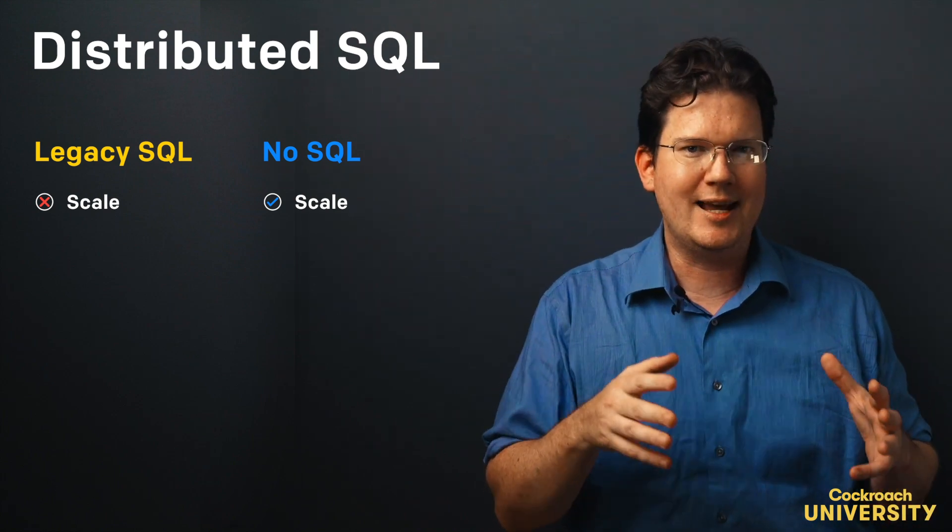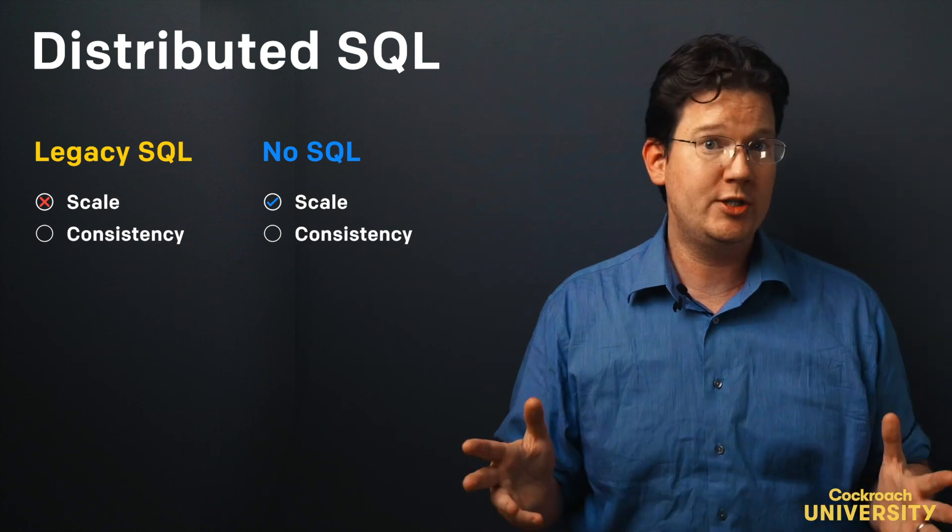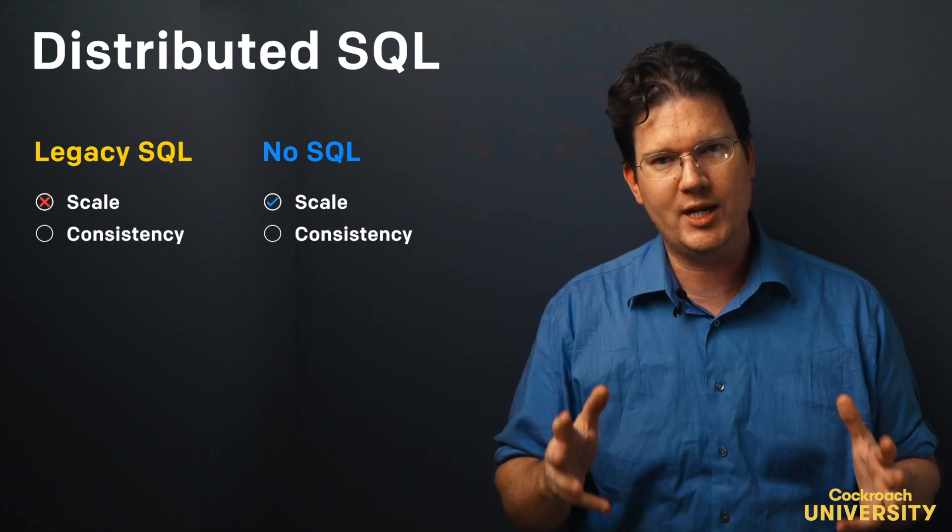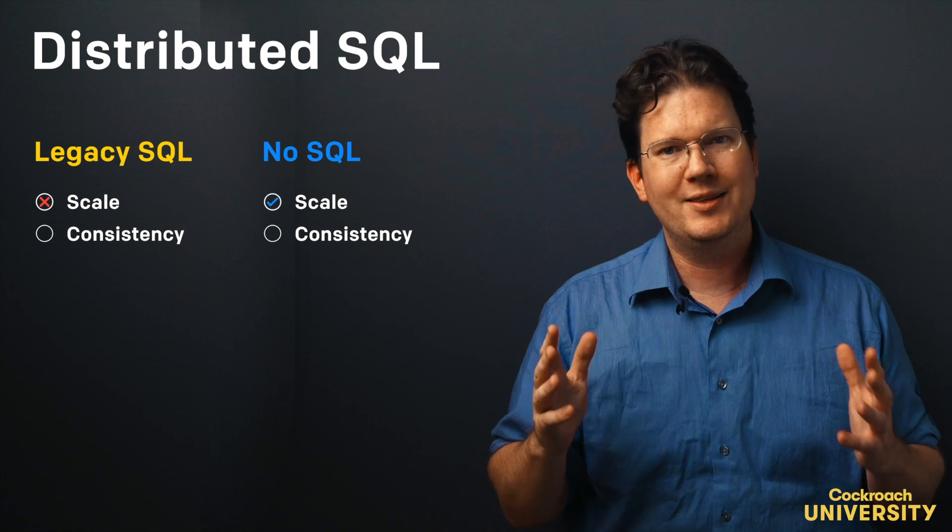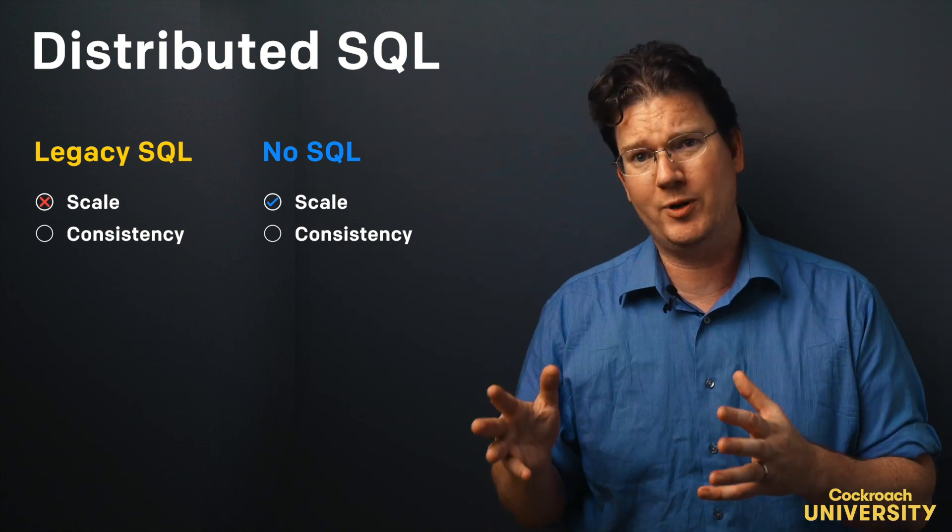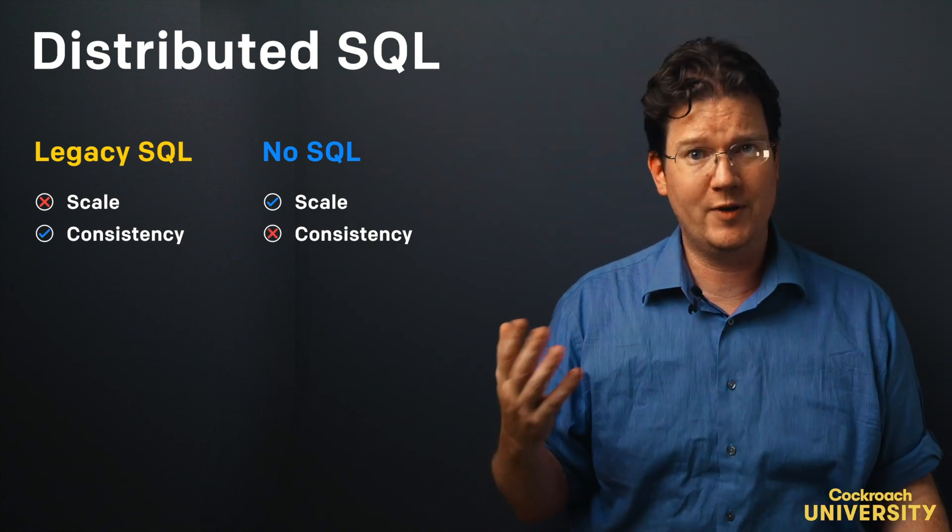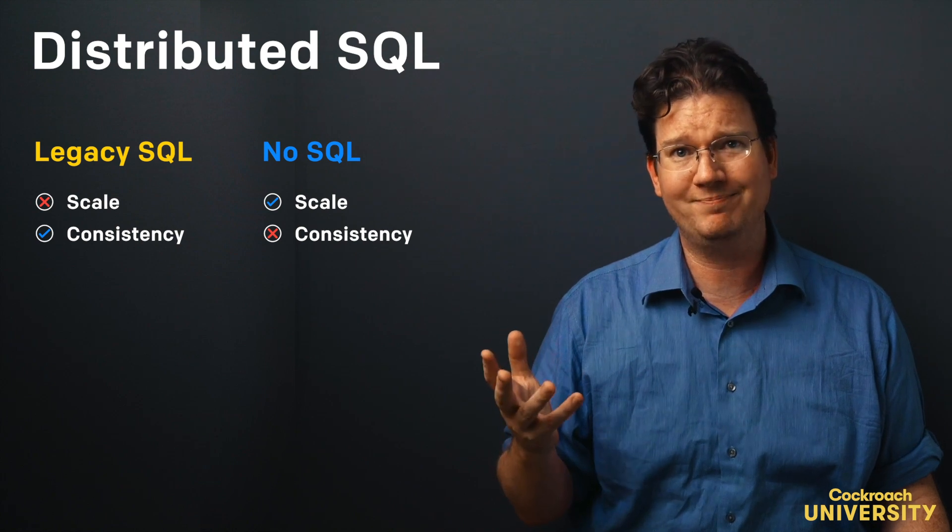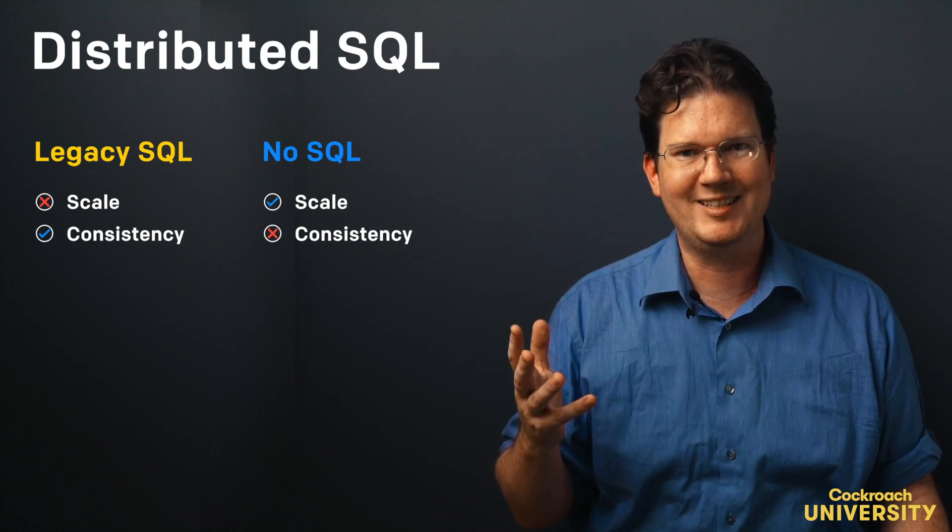Next up is consistency, and in this context we mean that readers always see writes, and they see them appear in the same order in which those writes occur. This is an area where NoSQL often runs into issues. Many of them will throw around the term eventually consistent, but what they mean is not consistent.